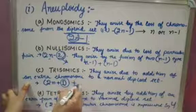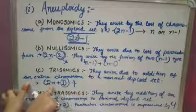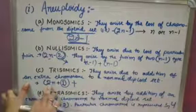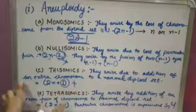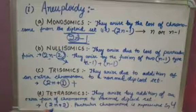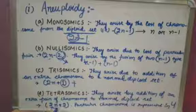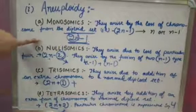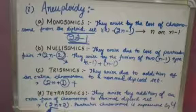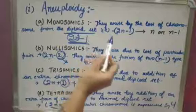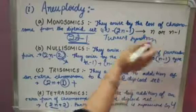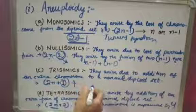Trisomic arises due to the addition of one extra chromosome to the diploid set, giving 2n plus 1. Tetrasomic arises by the addition of an extra pair of chromosomes to the normal diploid set, giving 2n plus 2 — where the particular chromosome has four representative doses. An example of monosomic is Turner syndrome, and an example of trisomic is Down syndrome.